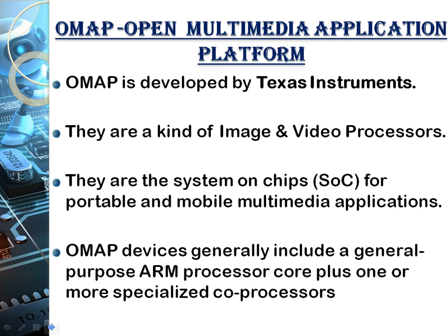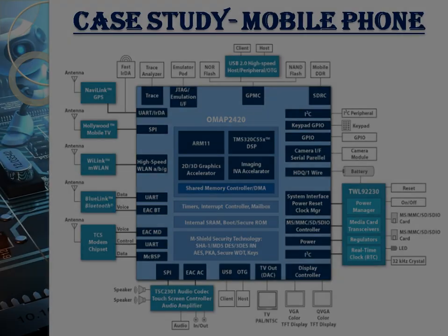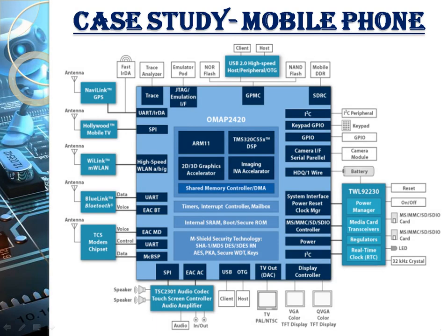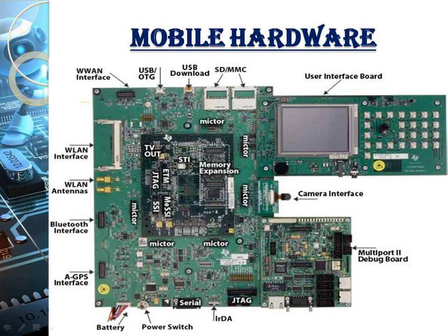OMAP — Open Multimedia Application Platform — is designed by Texas Instruments. It is a very high-level platform featuring two types of processors on a single board: an ARM processor and a DSP processor. This is a case study of a mobile phone using an OMAP platform with an ARM11 core and a DSP processor.